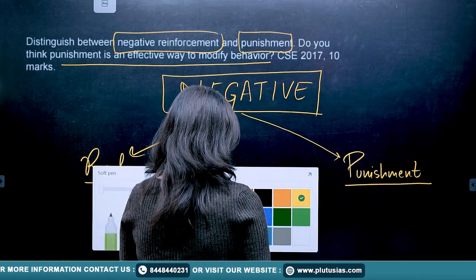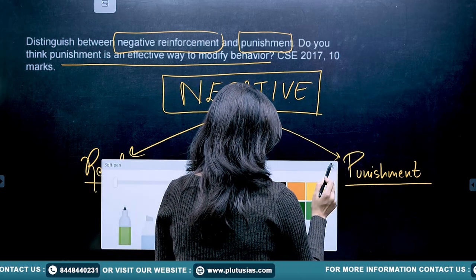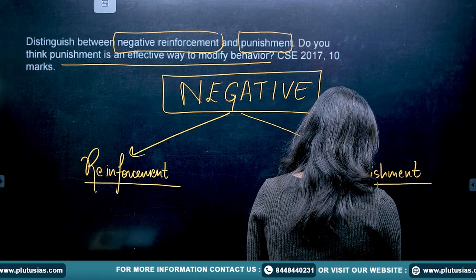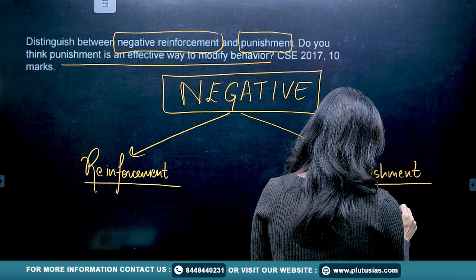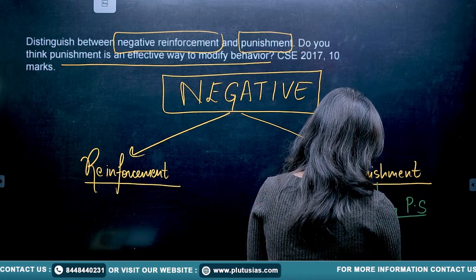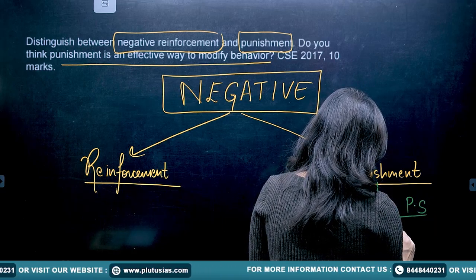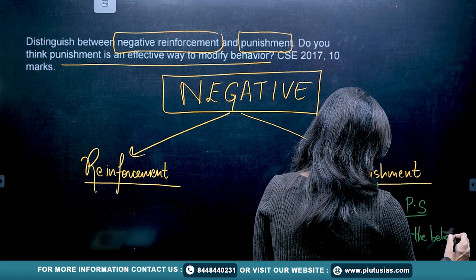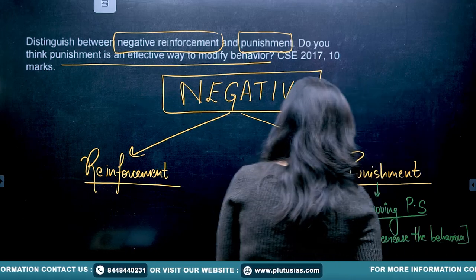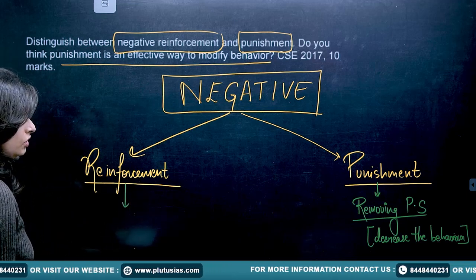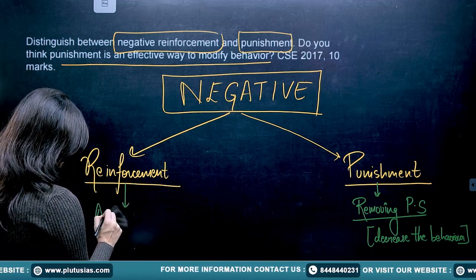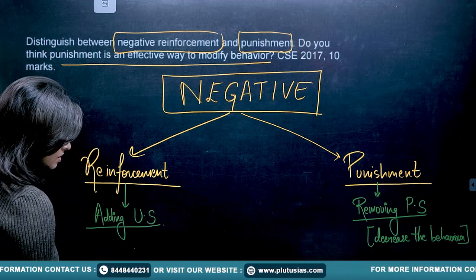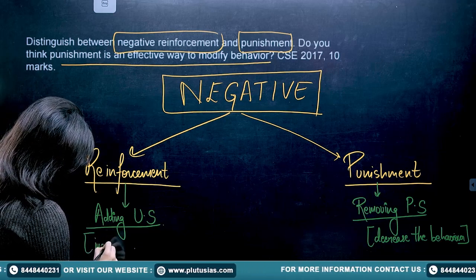Negative punishment is when you are removing a pleasant stimulus to decrease the behavior of a person. Negative reinforcement is when you are adding an unpleasant stimulus to increase the behavior of the person.